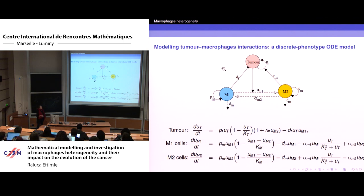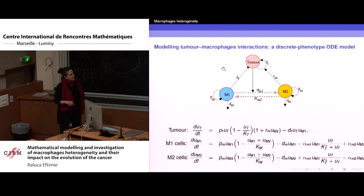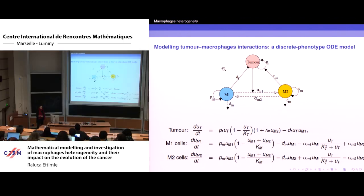M1 cells proliferate logistically and die at a rate D_M. Because of the tumor microenvironment, M1 cells can become M2 cells at a rate alpha_M1. And through external treatment, we can reverse the phenotype of the macrophages from M2 back to M1.